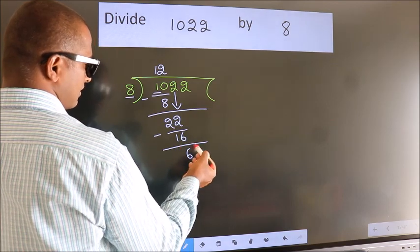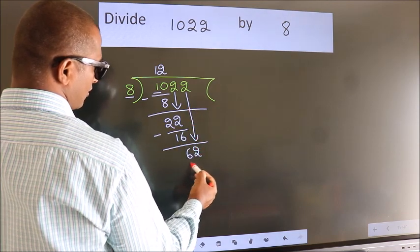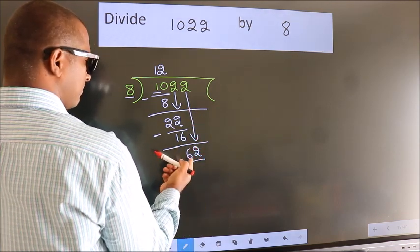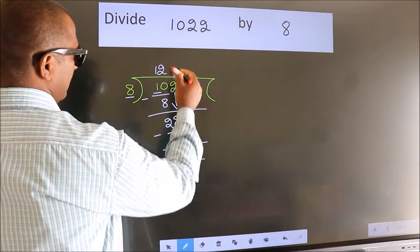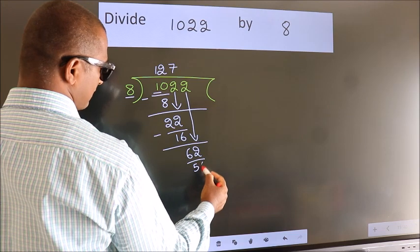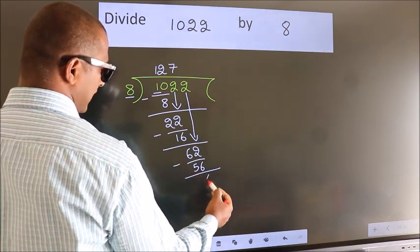After this, bring down the next number, 2, making 62. A number close to 62 in the 8 table is 8 sevens, 56. Now we subtract and get 6.